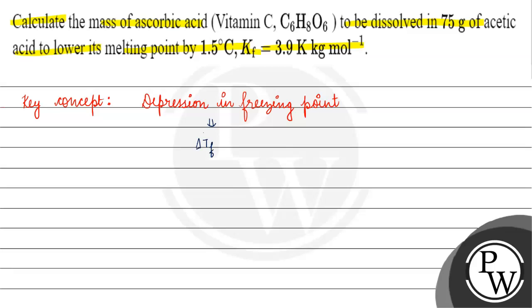The formula for depression in freezing point is ΔTf = Kf × m, where ΔTf denotes the depression in the freezing point, Kf is the cryoscopic constant, and m is molality.